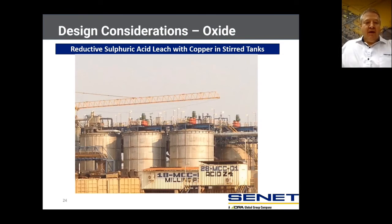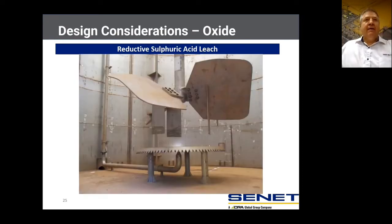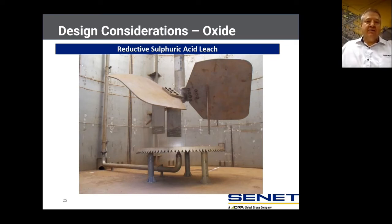Here is a picture of a leach circuit in the DRC showing a number of leach reactors. This is an example of a leach reactor that has SO₂ addition to leach the cobalt mineral, but there is also copper leaching occurring in these vessels.